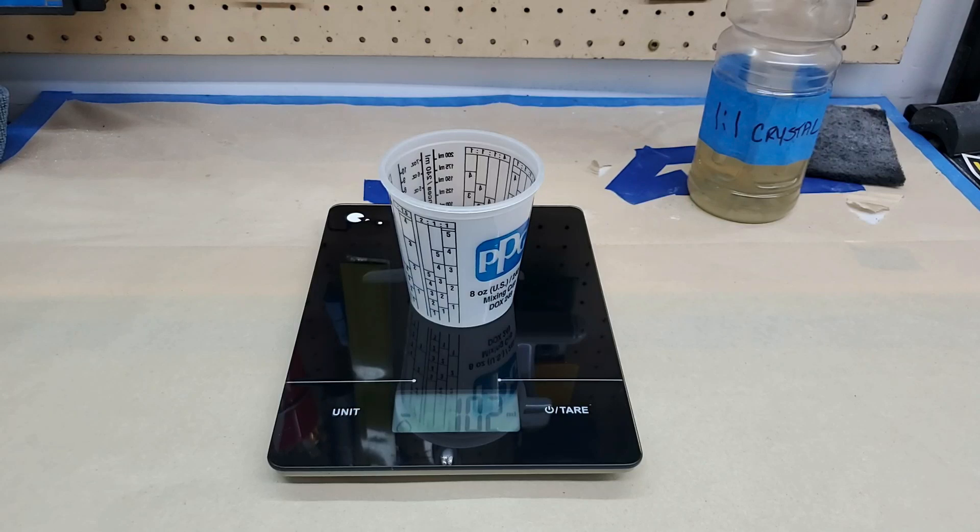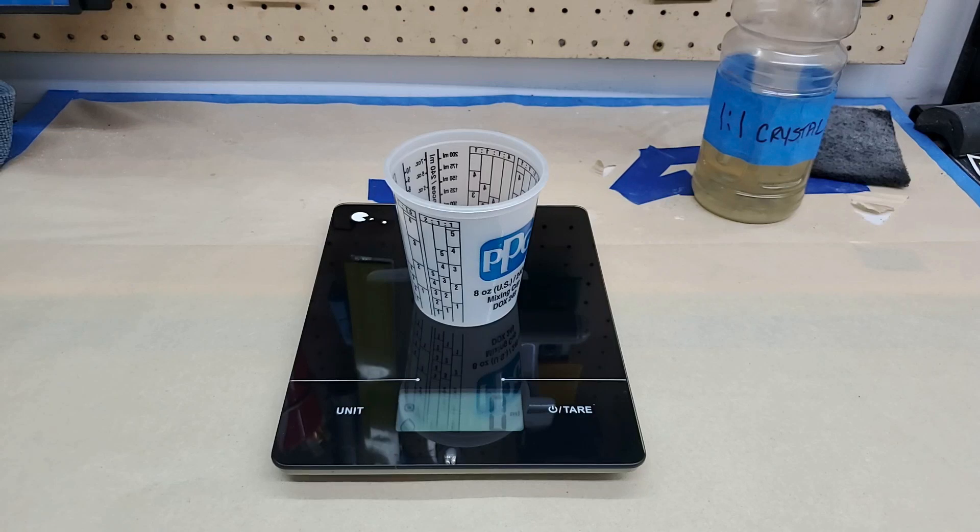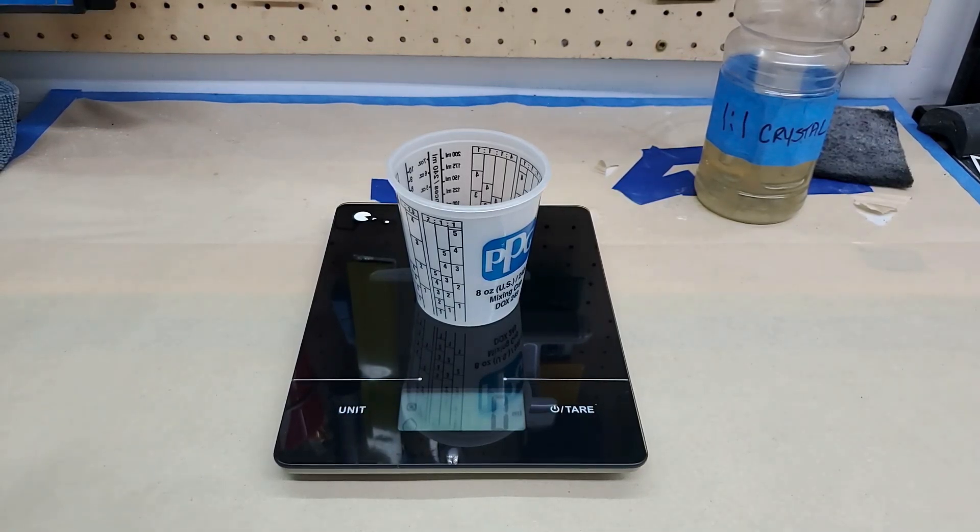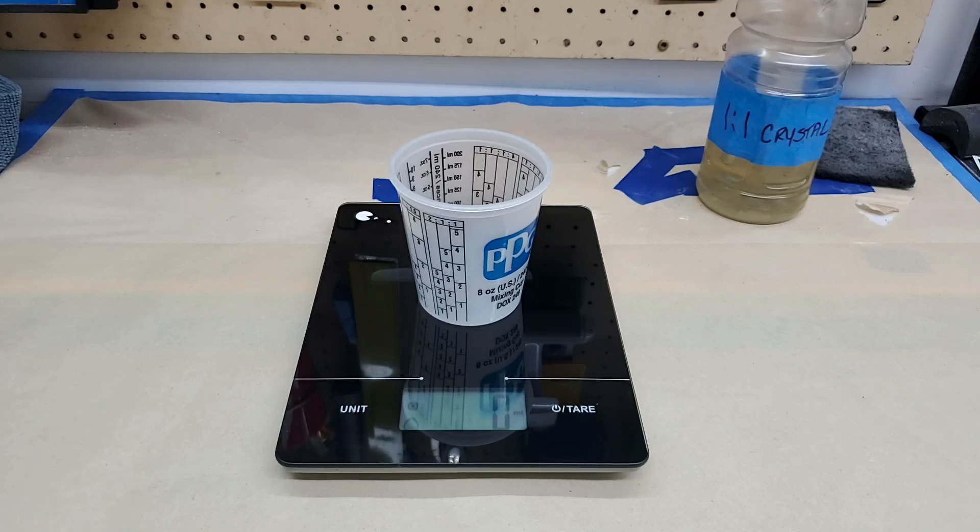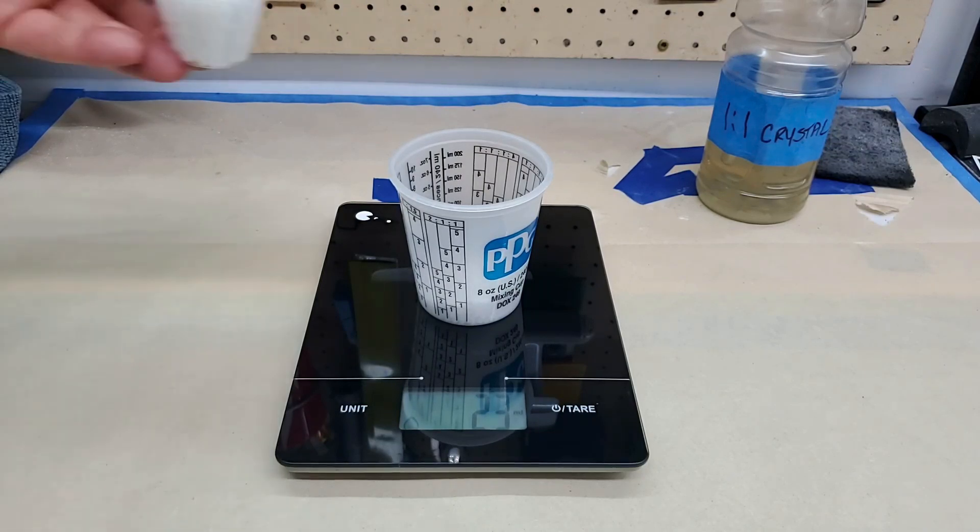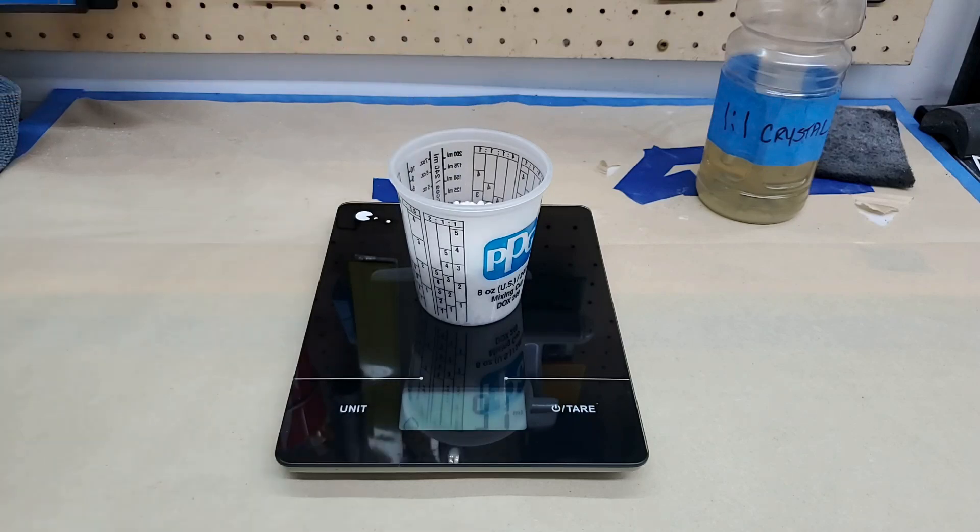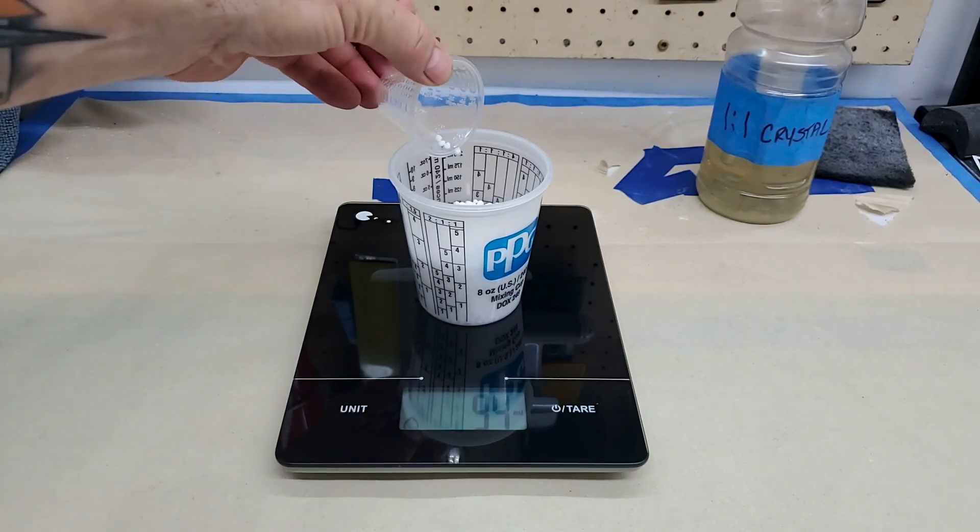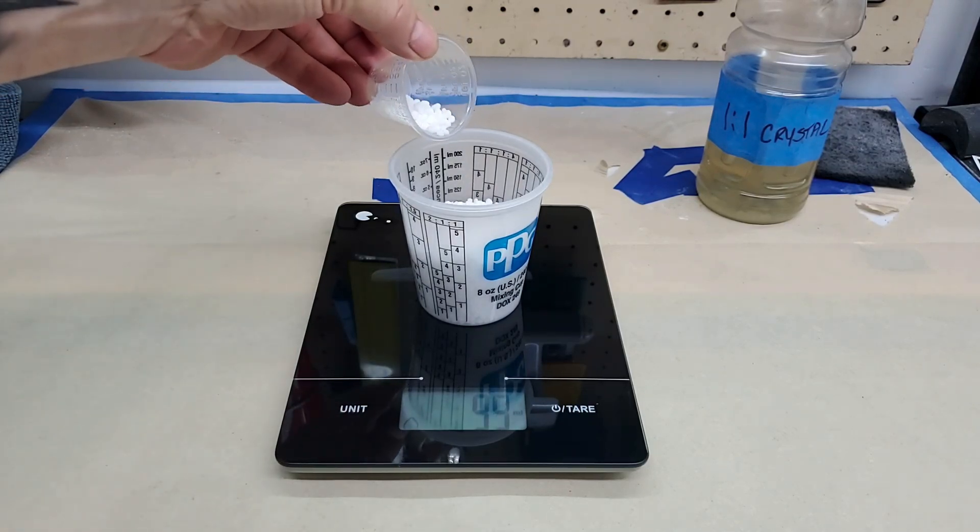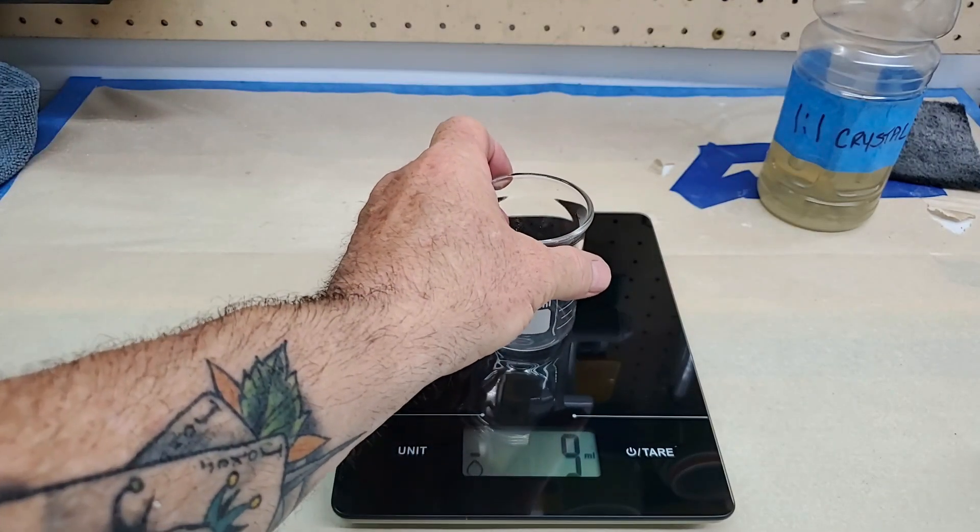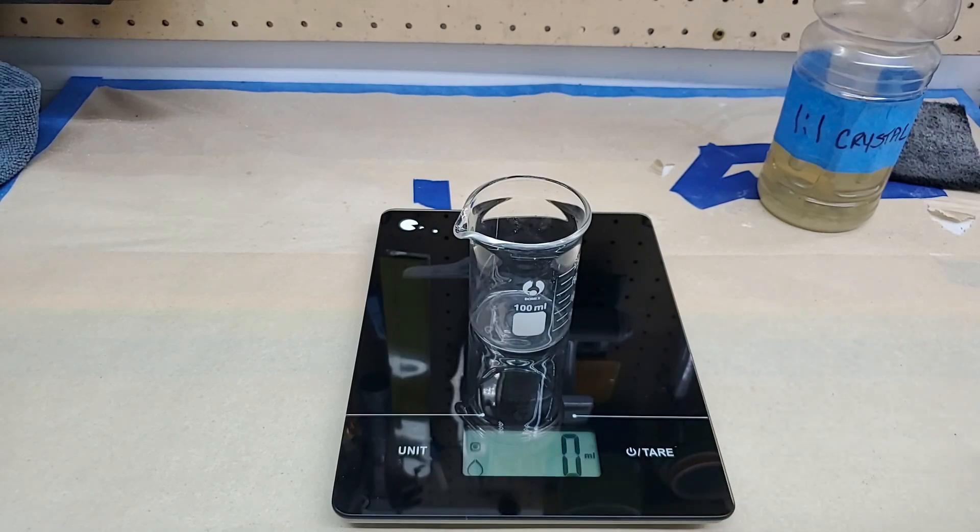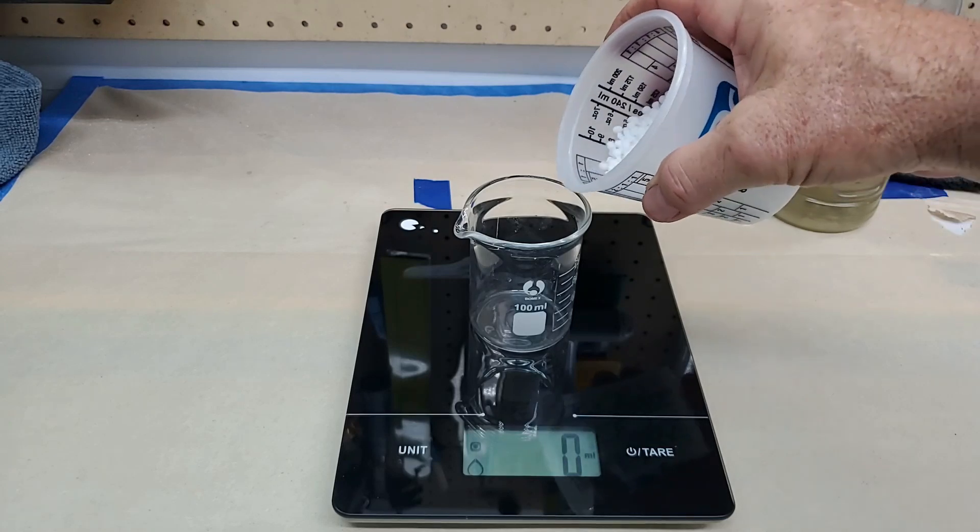Now we're going to weigh out our urea, which means we have to tare out this container. And we want 100 milliliters by weight of the urea prills. You want to be precise with this to get the best crystal results. There's 100 milliliters.